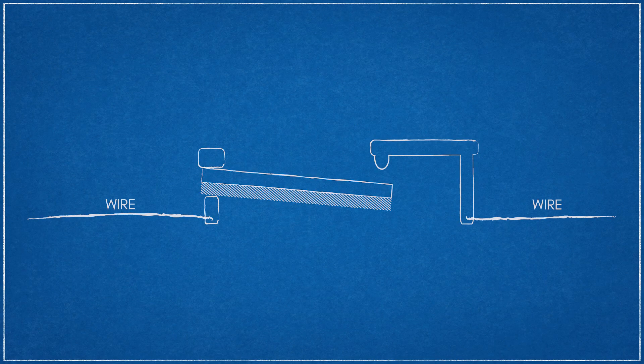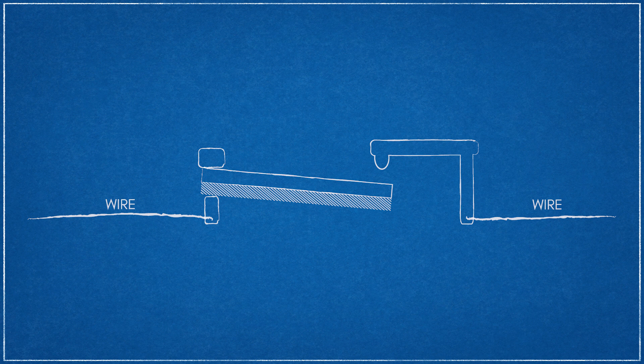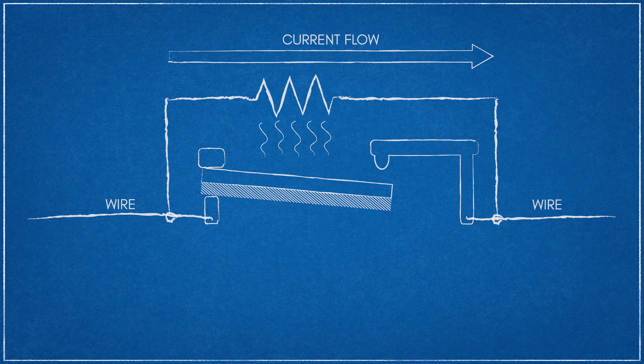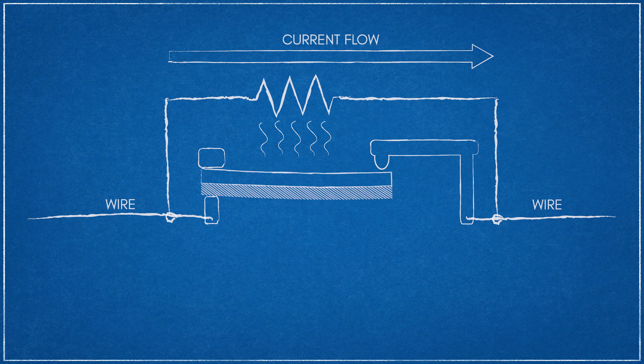We can expand on the functionality of bimetallic switches further by mounting an electrically resistant heating element to the bimetallic strip. As current flows through the heating element, the electrical resistance causes a dissipation of heat, raising the temperature of the bimetallic strip. As it heats up, the thermal motion causes the bimetallic element to switch on the flow of electricity.